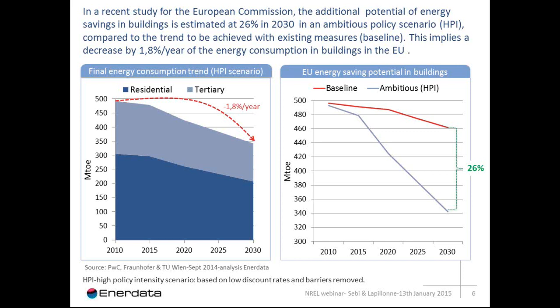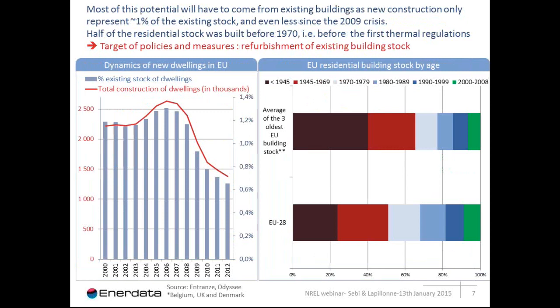The consumption will decrease even in a baseline scenario, but in an ambitious policy scenario the potential reduction could be as much as 26%. There is a kind of potential that we could try to tap with appropriate policy measures — it is cost effective for consumers. The red line shows what we could expect with the baseline, which already includes many implemented policy measures. The ambitious scenario represents the potential from additional measures, with consumption decreasing by 1.8% per year, and CO2 emissions decreasing even more due to a shift to less carbon-intensive fuels. Most of the potential must come from existing buildings, because new construction in Europe represents roughly 1% of the existing stock — and since the crisis, even less, down to 0.7–0.8%. Half of existing dwellings were built before 1970, before the first thermal regulation existed.